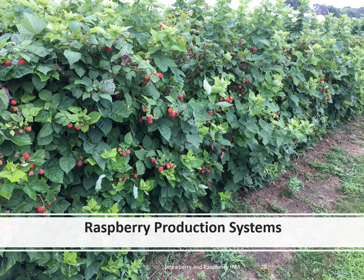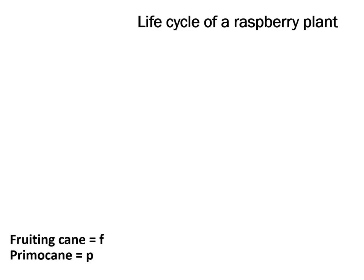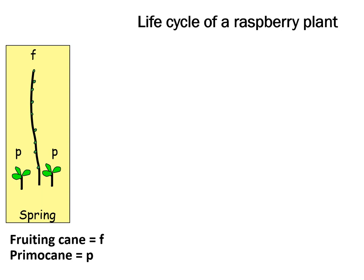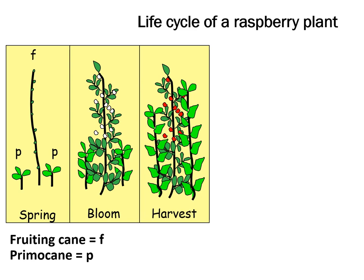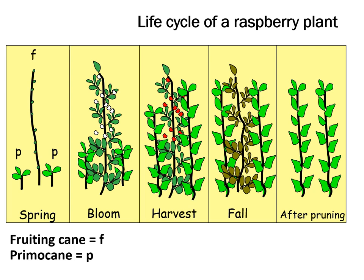Now we'll switch gears into raspberry production systems. Today I'm going to focus on summer-fruiting raspberries and fall-bearing raspberries, which are produced either in the field or in protected systems like high tunnels. Long cane raspberry production is relatively new in Ontario. Summer-fruiting raspberries produce fruit on one-year-old canes, the floricanes. These floricanes will bloom and produce raspberries this year, while the primocanes, which are the new canes that grow every year, will grow in year one and then fruit in year two as the floricanes. After they are done fruiting they will die and need to be pruned out for the next year's floricanes.